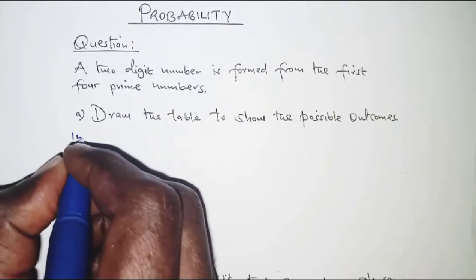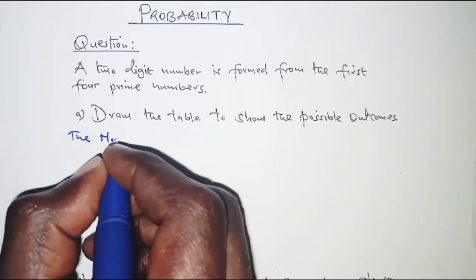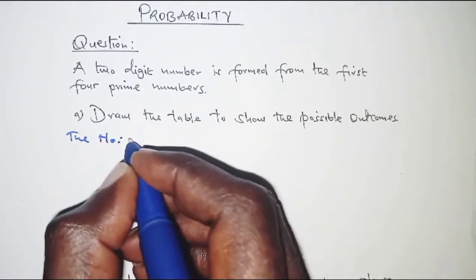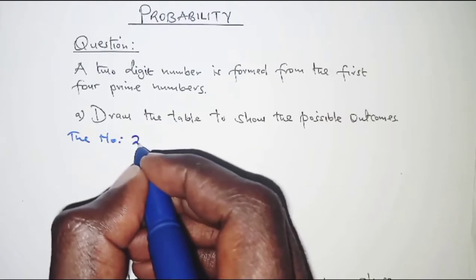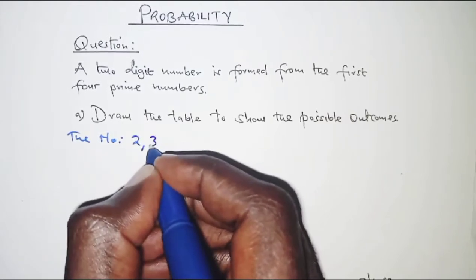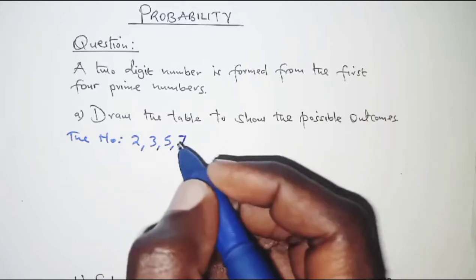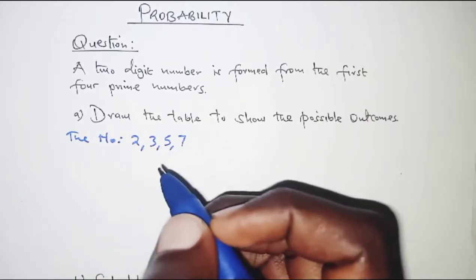So the numbers, first of all we have to identify them. They are 2, 3, 5 and 7. So those are the first four prime numbers.